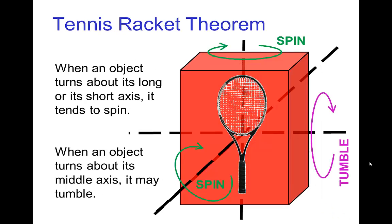Now, it turns out there's a theorem called the tennis racket theorem, which explains why objects spin or tumble.